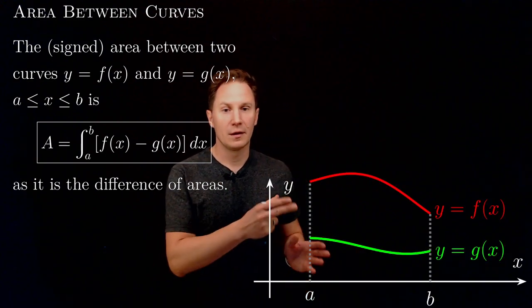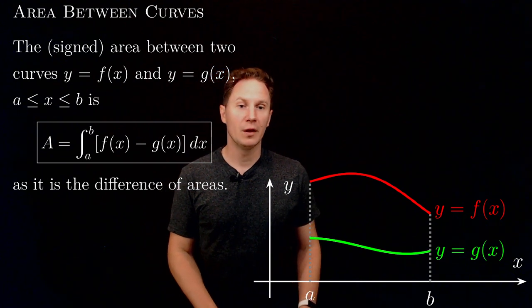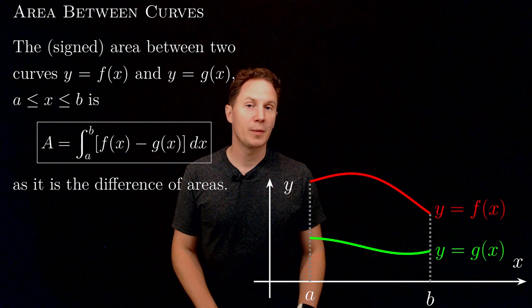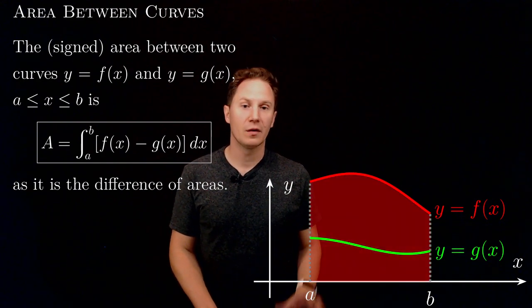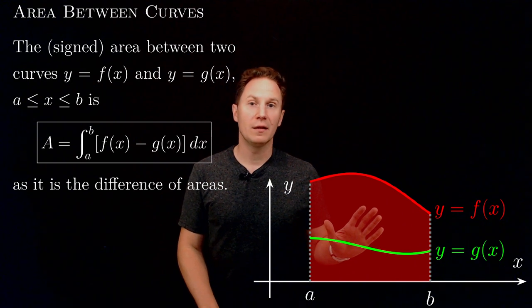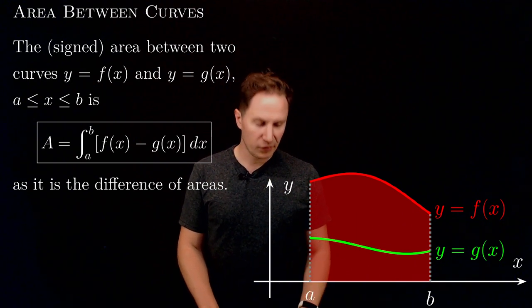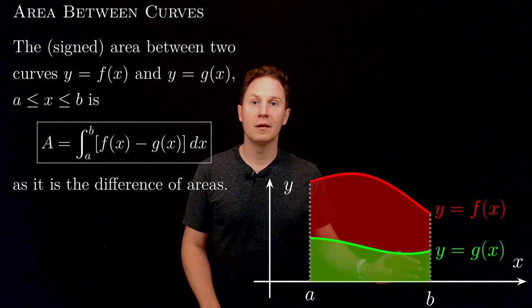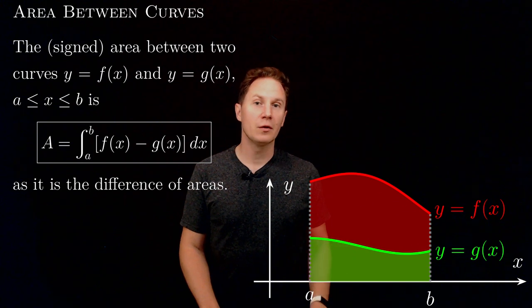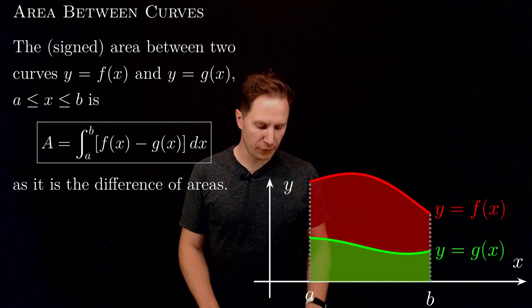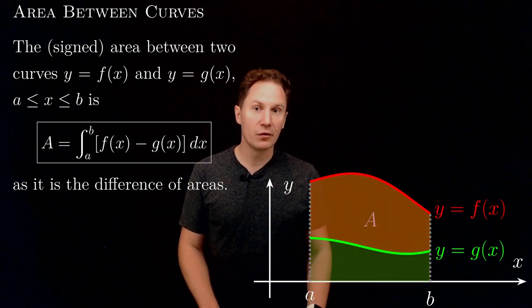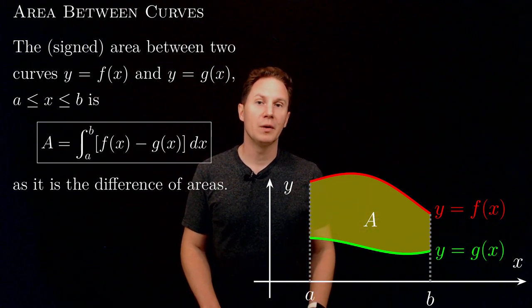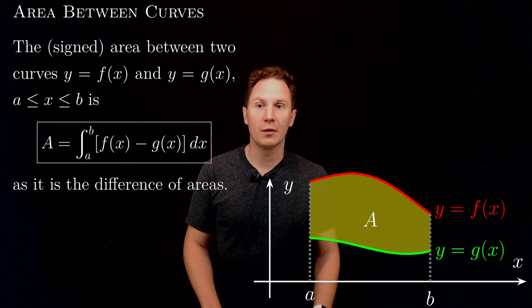Let's consider the two graphs to be something like this. The integral of f with respect to x from a to b is the area of the region shaded in red, whereas the integral of g from a to b is the area of the region shaded in green. The difference of these two integrals gives us the area of the region between the two graphs.